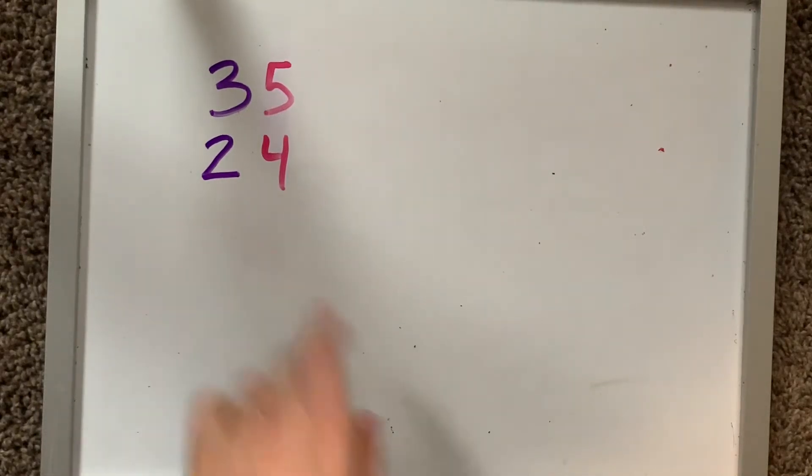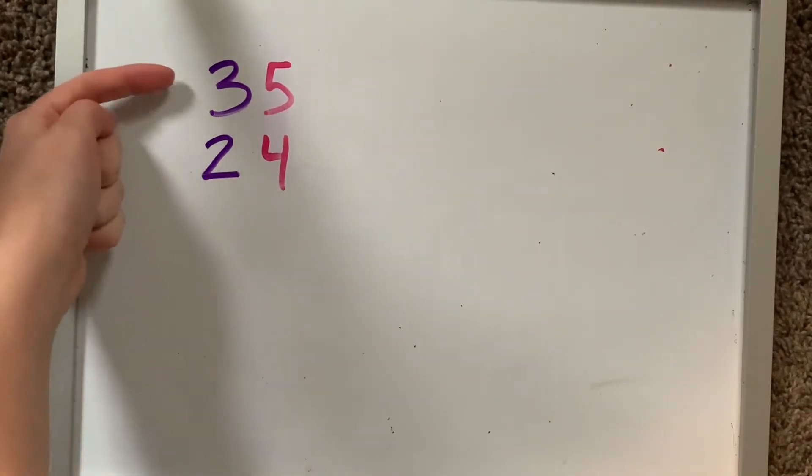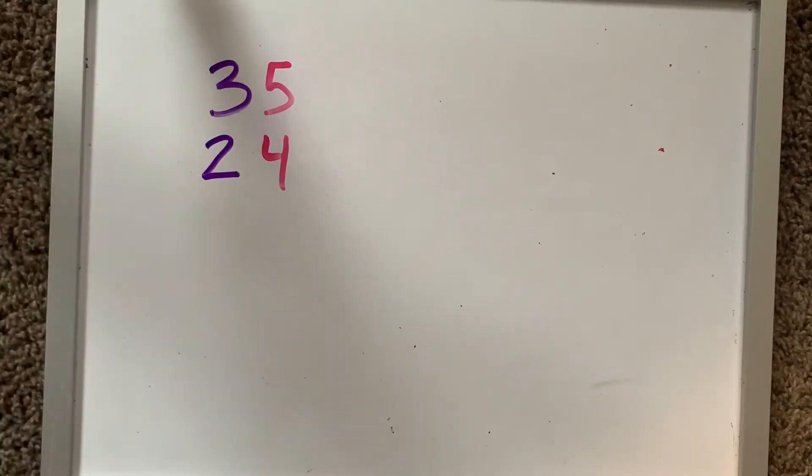Alrighty my students, I have two numbers put over here. I have the number 35 and I have the number 24. And I've made it so that the tens are in purple and the ones are in pink, and that's just so that we can see those separated a little bit.